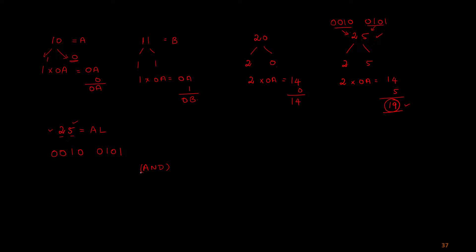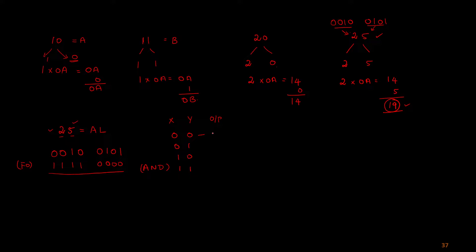If we AND the register value with F0, that mask is 1111 0000. The AND operation means that bits masked with 1 pass through and bits masked with 0 become 0. So AND-ing 25 (0010 0101) with F0 retains only the upper nibble — giving 0010 0000, which is 20.